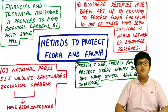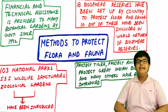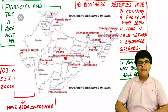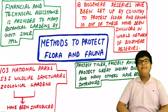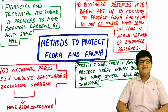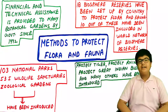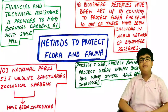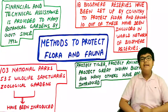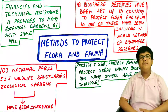The government has taken various steps to protect flora and fauna. 18 biosphere reserves have been set up, 10 of which are included in the World Network of Biosphere Reserves. Financial and technical assistance has been provided to botanical gardens since 1992. Project Tiger, Project Rhino, Project Great Indian Bustard, and other eco-developmental projects have been launched. Additionally, 103 national parks, 535 wildlife sanctuaries, and numerous zoological gardens have been established.